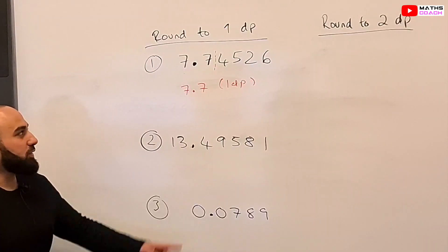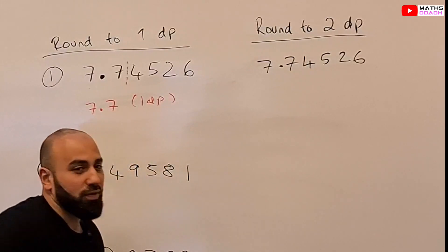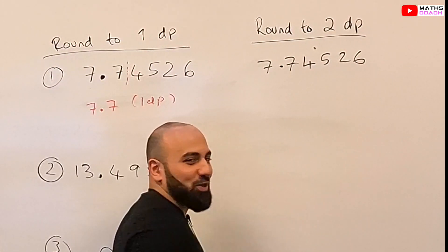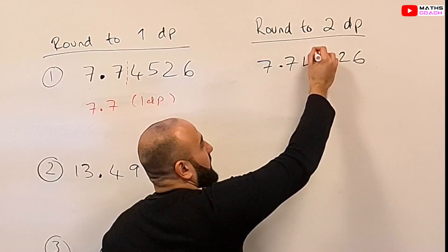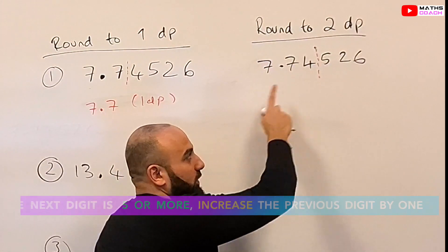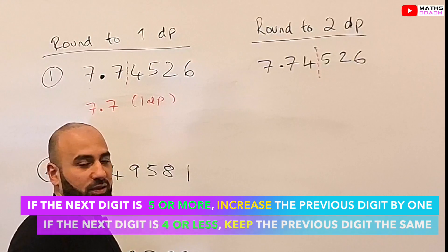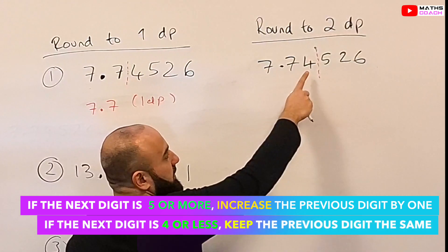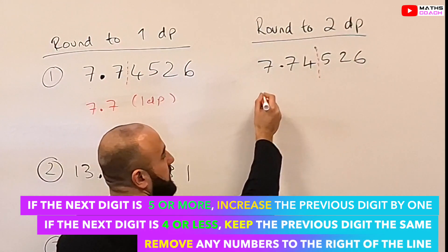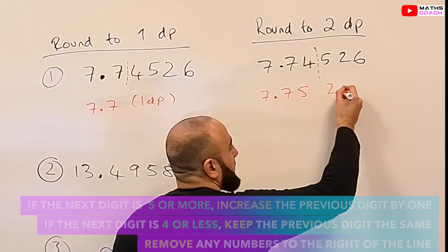Let's look at the same number, but round it to two decimal places. This time we want to keep two numbers after the decimal point, so we draw a line after the 4. We look at the number next to the 4 and it's a 5. Therefore this number 4 will increase to a 5, so your answer is 7.75 to two decimal places.